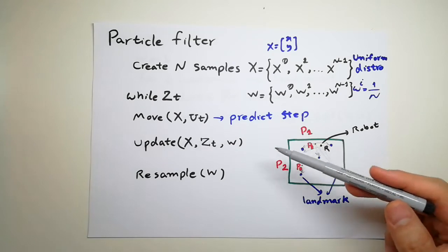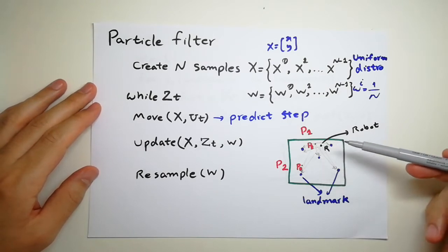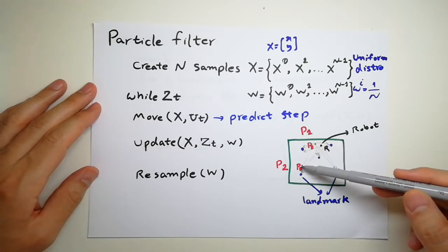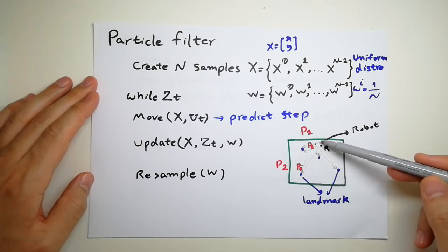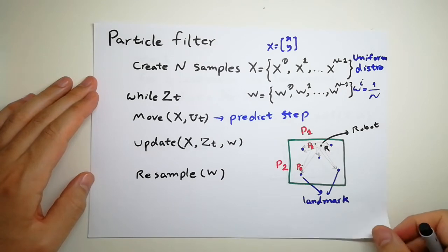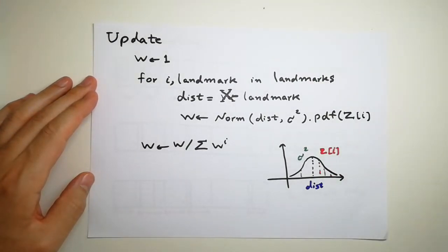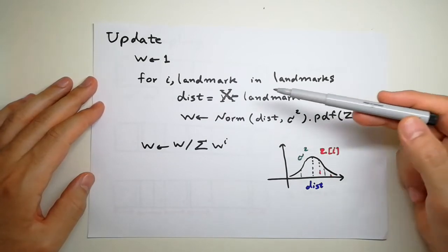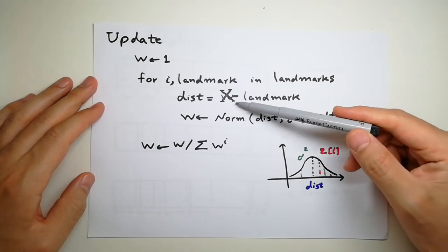Now I have to update the weights based on the measurement data. I have to give higher weights to particles like particle number one which was closer to the robot, rather than particle P2 which was far away. We're going to get rid of the far ones and give higher weight to the particles that are closer to the actual robot state. In the update function, we first assign weight one to all of them, then for every landmark we compute the distance between our particle and that landmark.